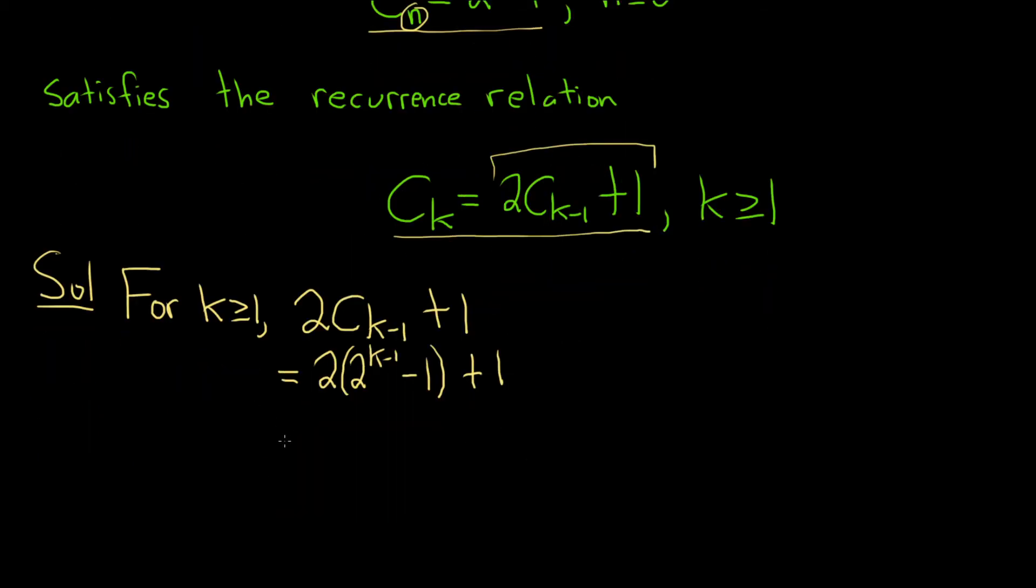Okay. So this is equal to 2 times 2 to the k minus 1 minus 2 plus 1.